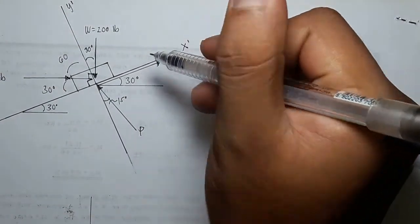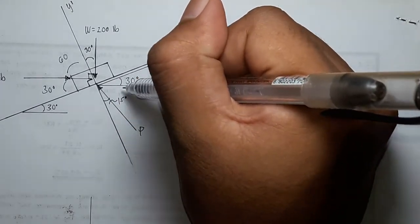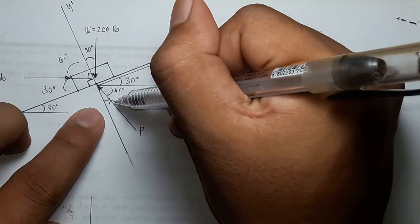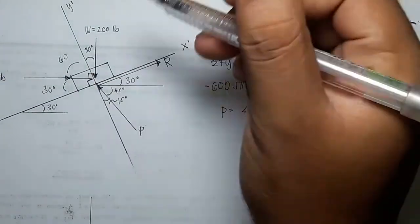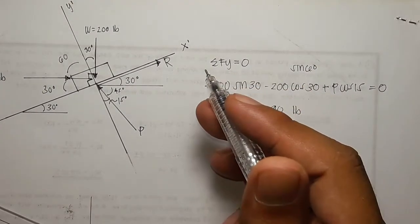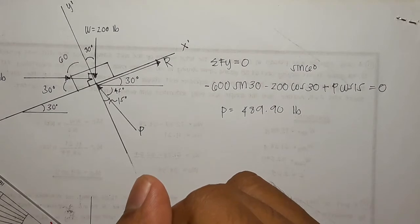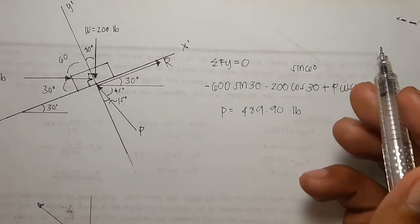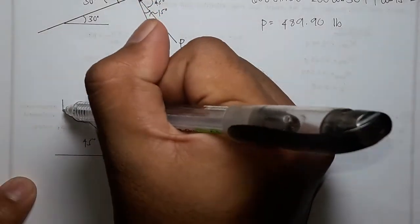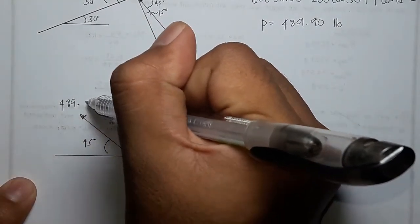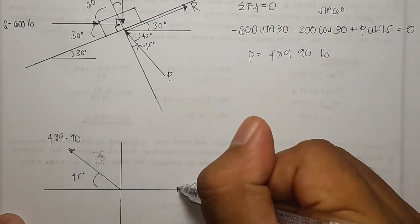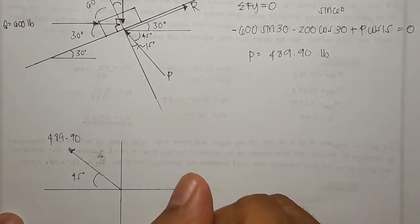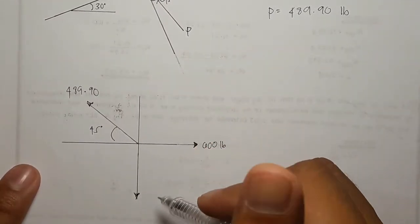So it's 30 degrees, so 90, so this would be the angle here is 45 degrees because 30 plus 15 plus 45 is 90. So our P going up is 45 degrees, 489.90, going to the right is our 600 pounds.